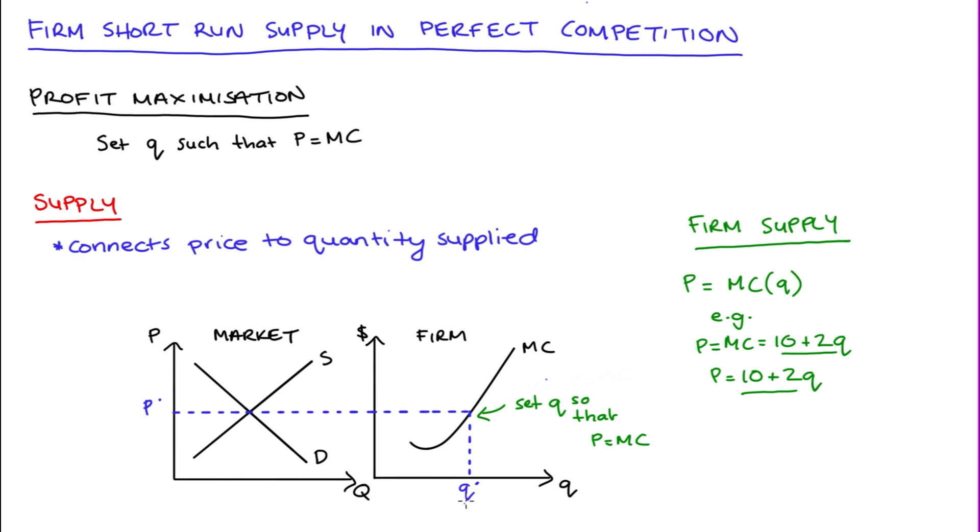Now, if the price changed, so maybe demand increases to d1, the price in the market would increase to p star star. The firm would change its profit maximization quantity to q star star. Again, just making sure that price is equal to marginal cost.